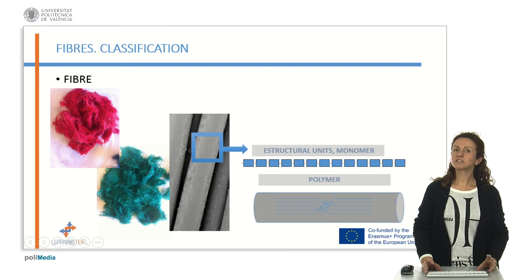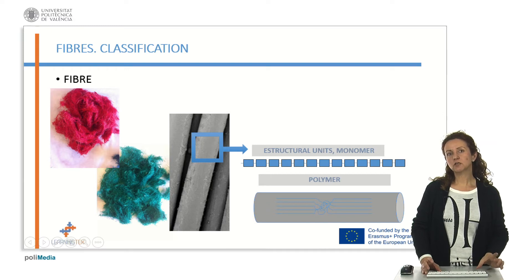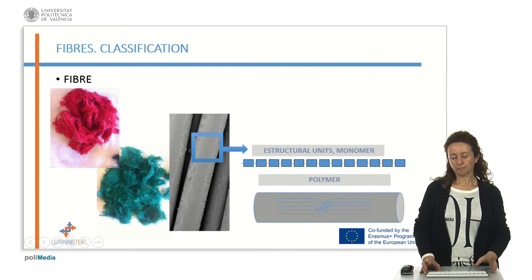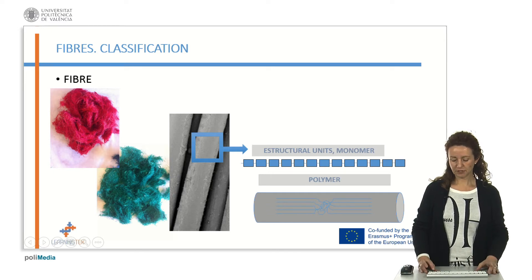What is interesting for us is to know that every fibre is made of different chains we call polymers. Depending on the polymer, many of the properties of the fibre will be assigned.